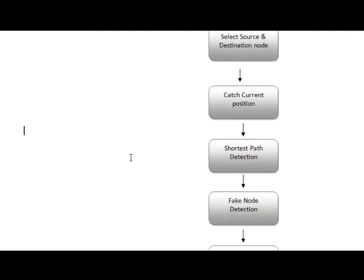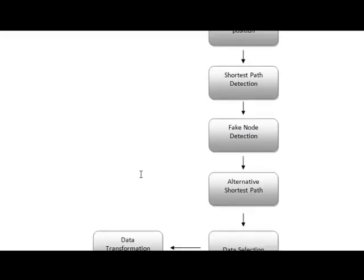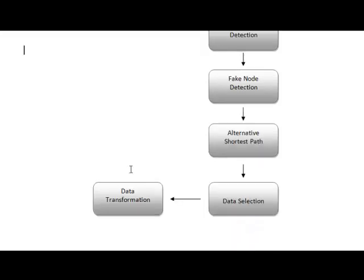We identify the current position of each node from the source node based on distances to find the shortest path. In shortest path detection, we analyze if the same node is visited more than once and analyze the speed level of each node. If the speed level is increased beyond the system configuration, we fix it as a fake node. If a fake node is detected in the path, we identify and remove it, then find the alternative shortest path for data transformation.